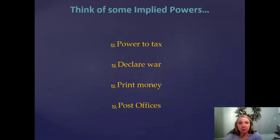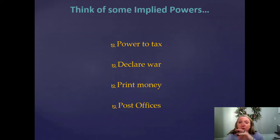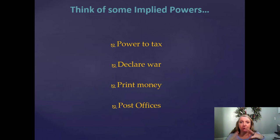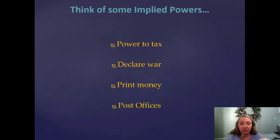Now, since we're focused on differentiating expressed and implied powers, I want you to take a moment to think about what could be some implied powers that fall under the power to tax, to declare war, to print money, and to manage post offices. What are some other things Congress could do rooted in those main expressed powers? Pause the video and come up with some suggestions — this is what I'm going to be looking for when I review your notes.